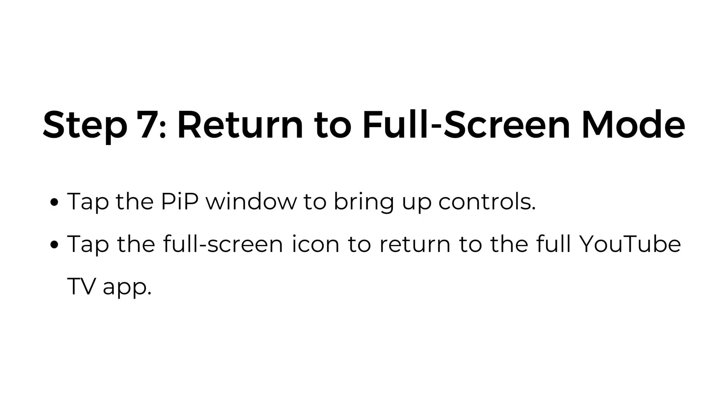Step number seven: return to full screen mode. Tap the PIP window to bring up the controls. Tap the full screen icon to return to the full YouTube TV app.